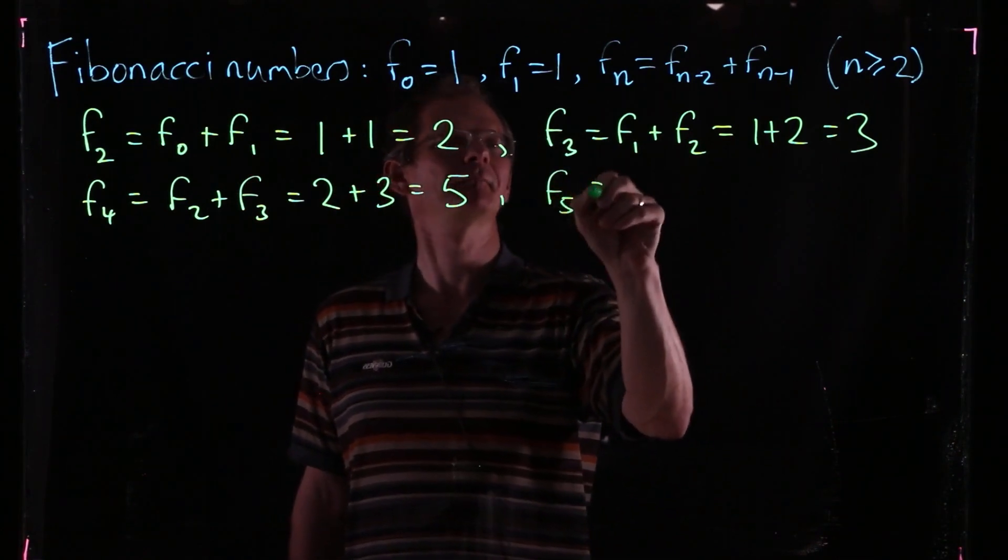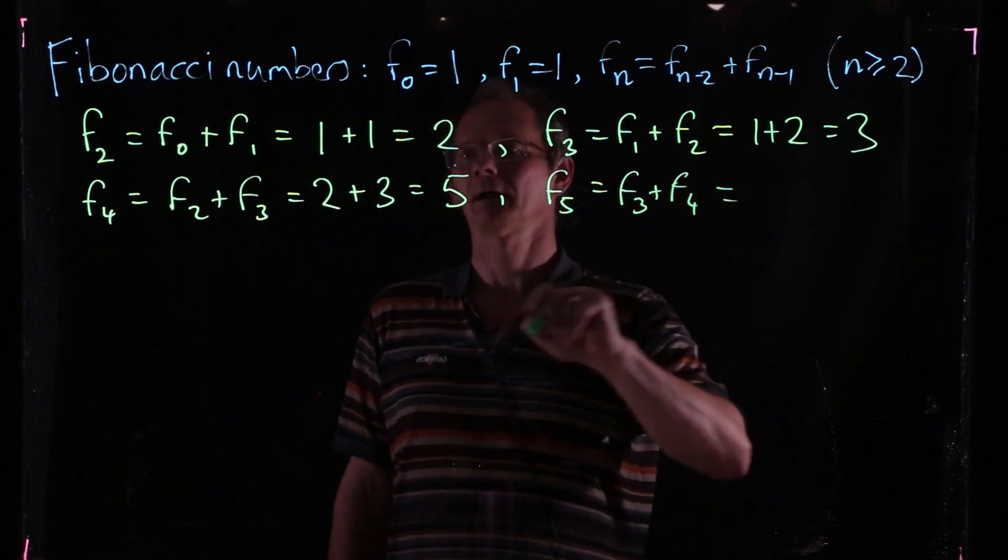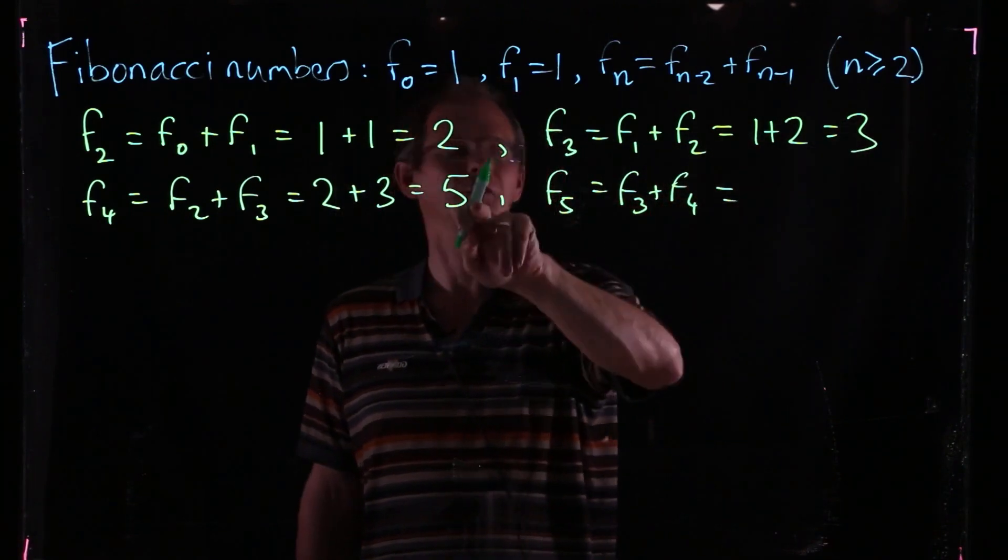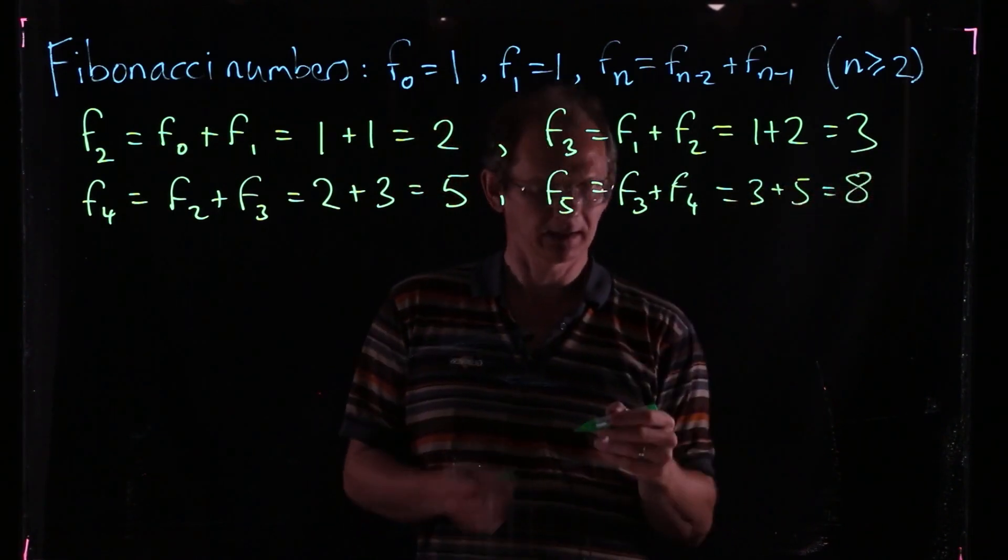And then F5 is F3 plus F4. So F3 is 3, F4 is 5, and so on.